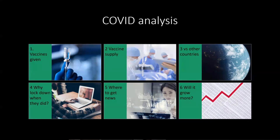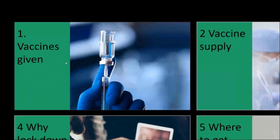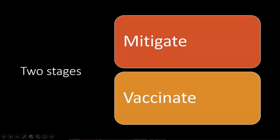Let's talk about vaccines given, vaccine supply, Cambodia versus other countries, why they locked down when they did, and will it grow more in the future. There are two stages that are going to happen to this outbreak and any outbreak around the world: mitigate and then vaccinate. Mitigate — keep it as low as we possibly can to reduce deaths and hospitalizations. Then vaccinate as fast as we can, because once we vaccinate enough people, COVID should end, subject to new variants.